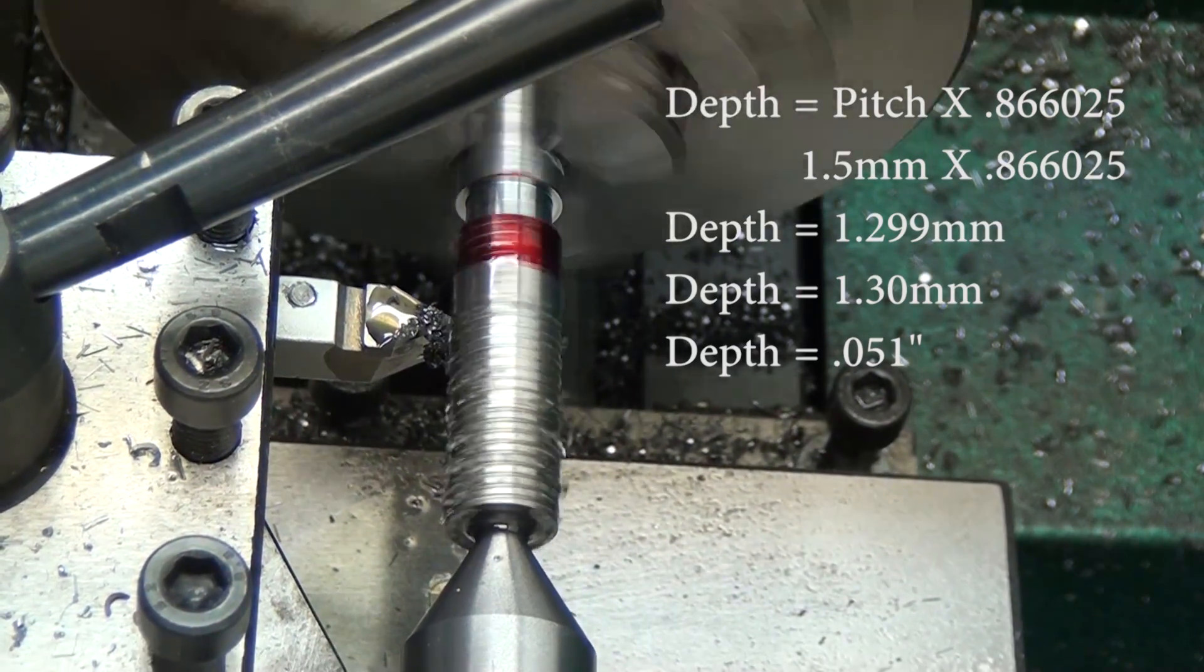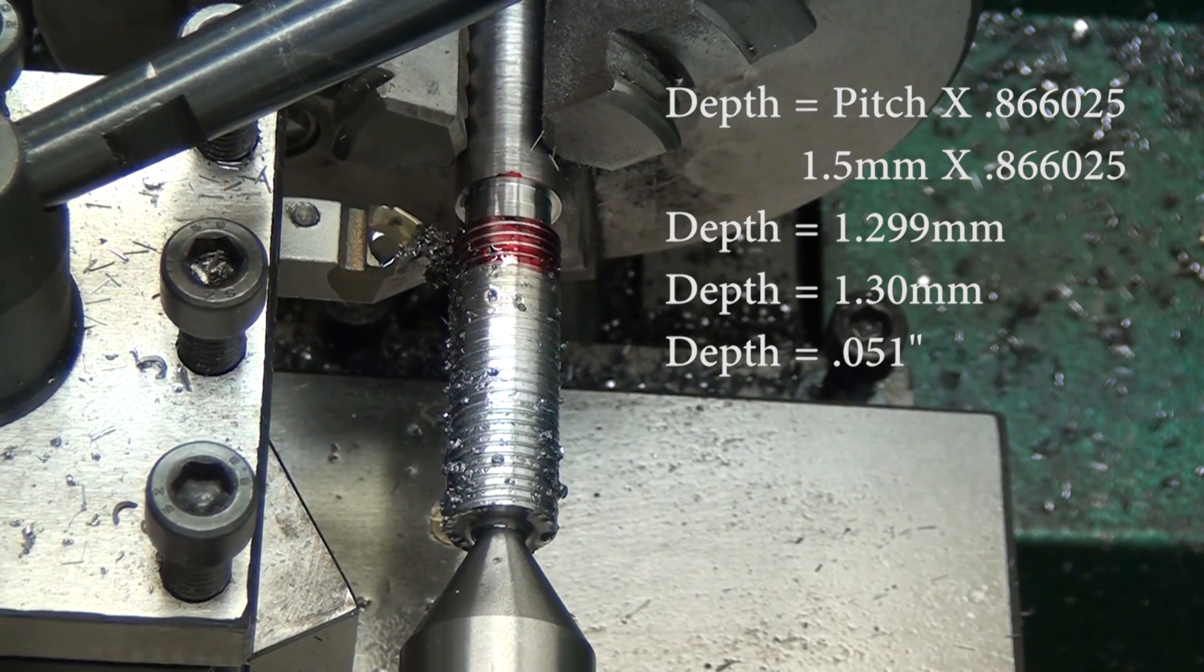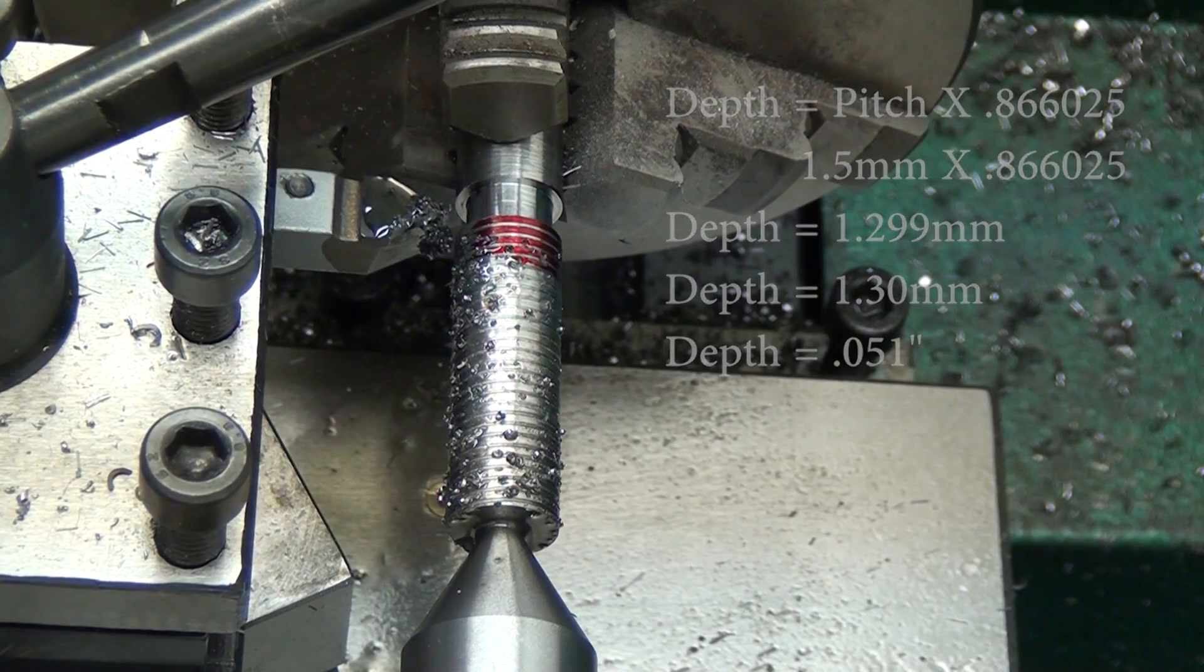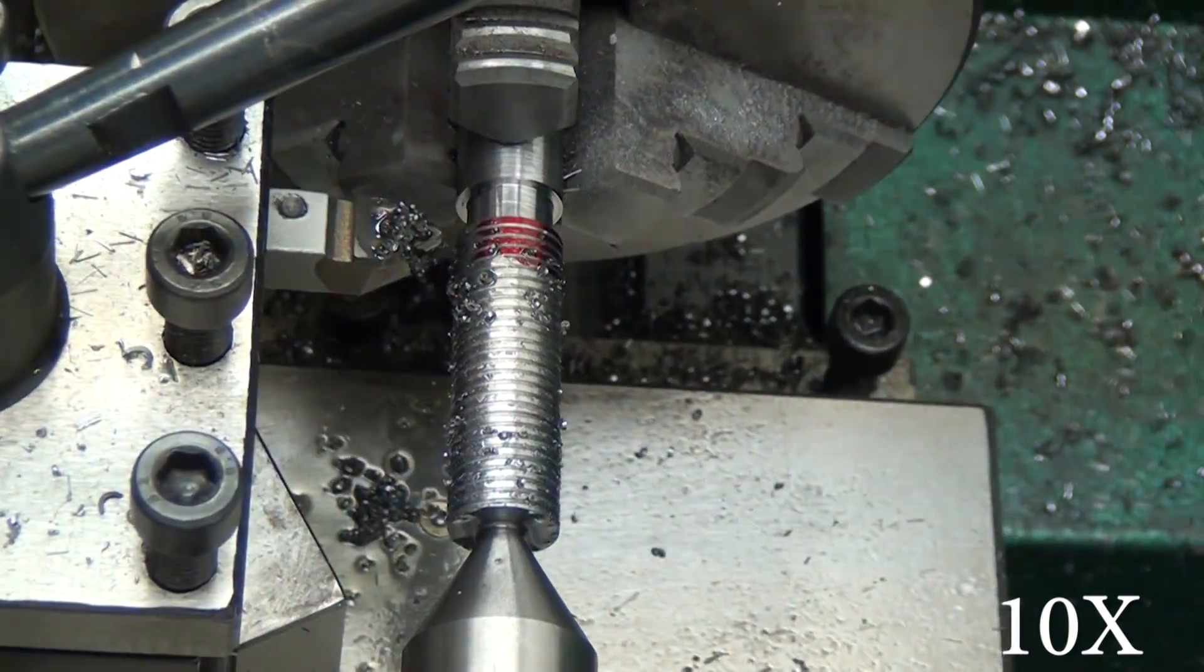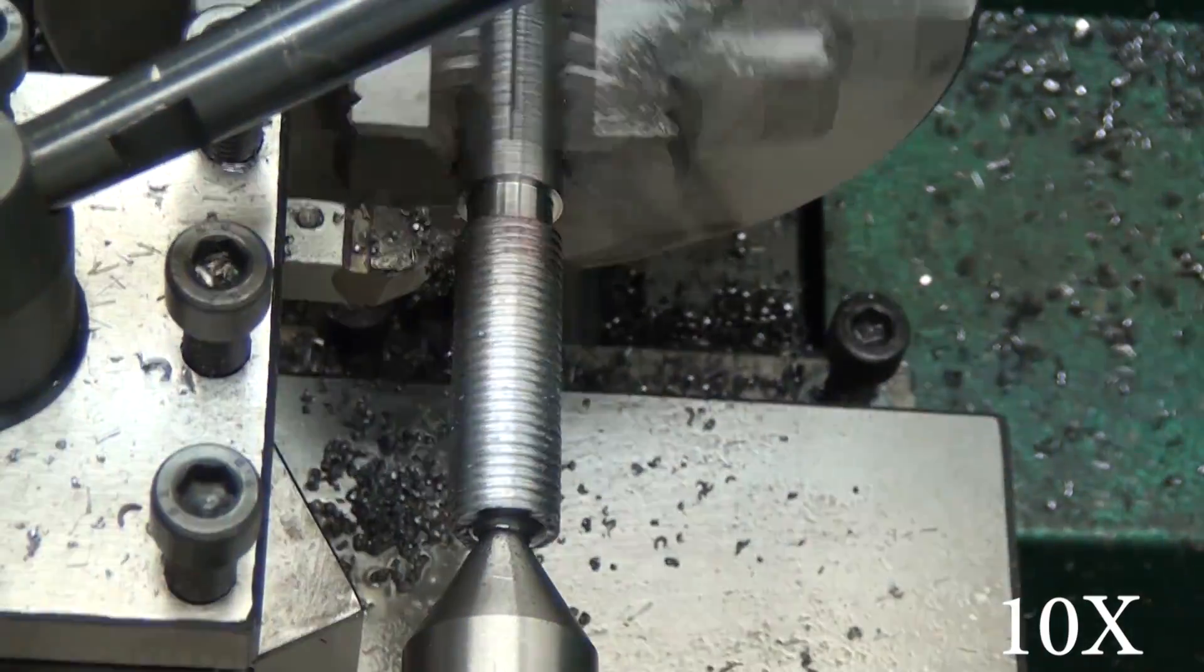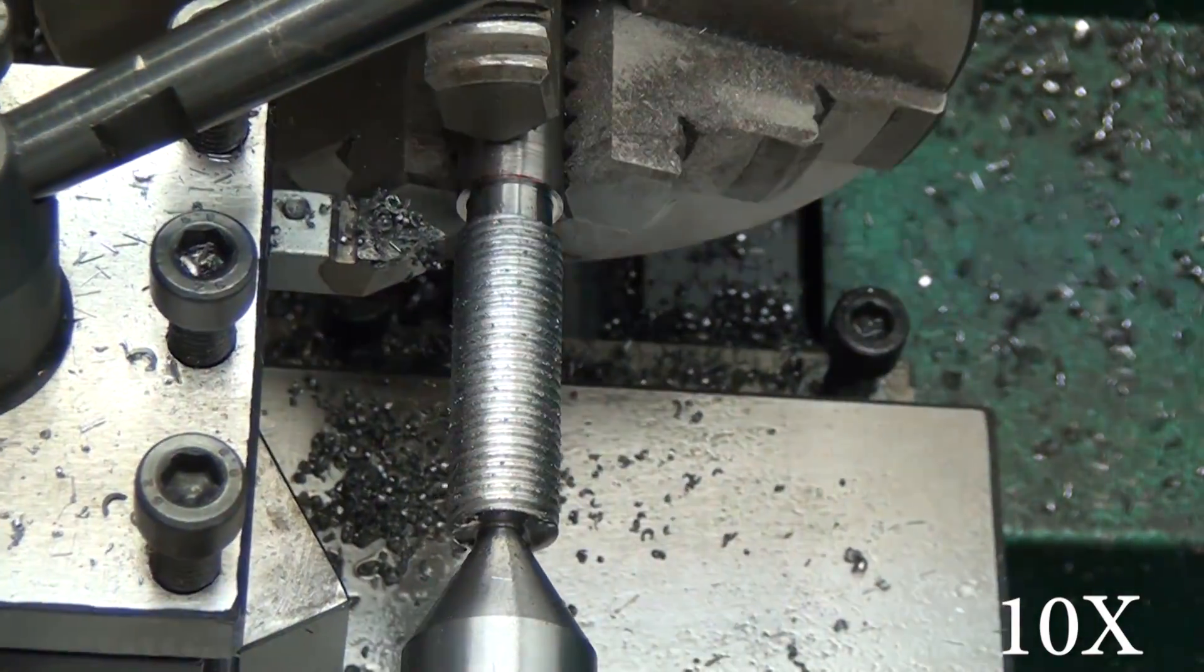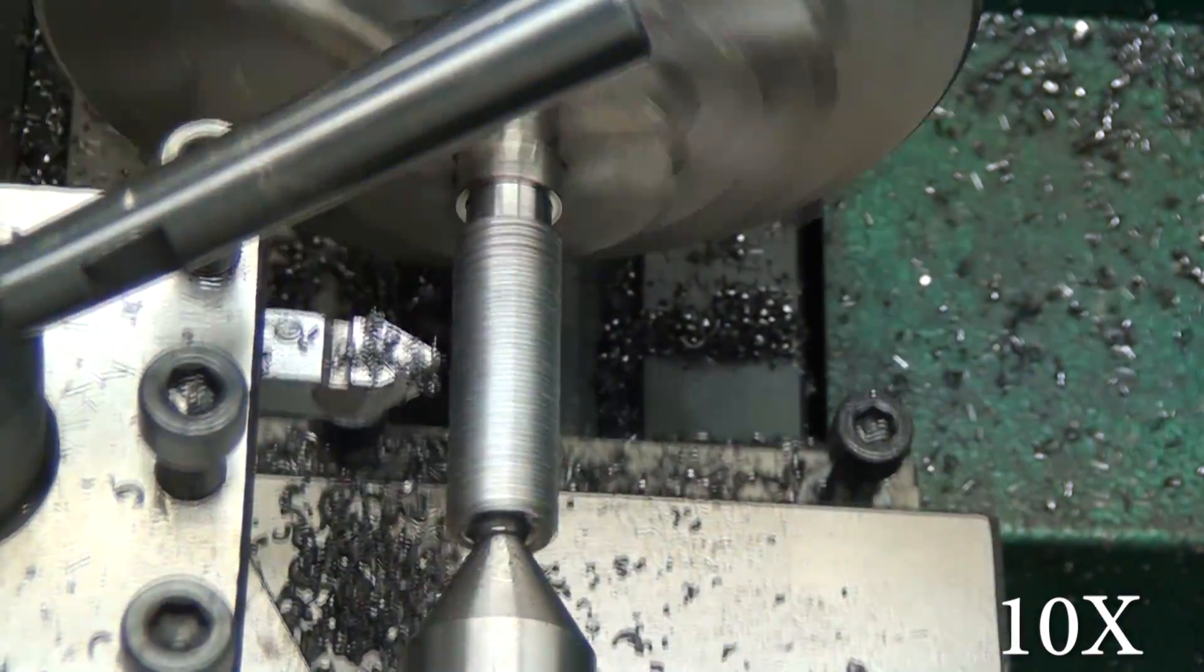This material is 12L14, which is a leaded steel, and it just turns beautifully. Everybody will tell you if you read online 12L14 cuts really nicely. Apparently it does have a higher tendency to rust than other steels—definitely not a stainless steel. Because it's a leaded steel it's not weldable, at least that's what I've read, but it works perfectly fine for my application.